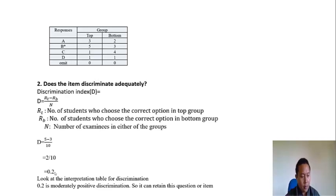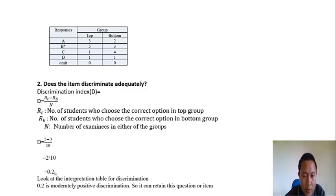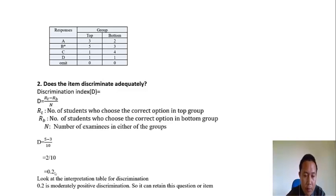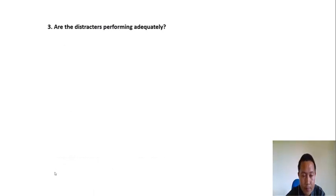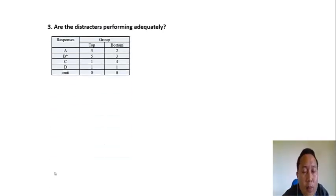Looking at the interpretation table, 0.2 falls under moderately positive discrimination. This indicates the item is very good, because it has a moderate difficulty index and moderately positive discrimination power. Therefore, we can retain this question.